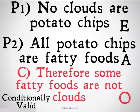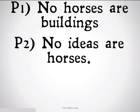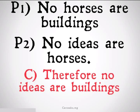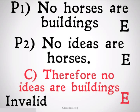No horses are buildings, no ideas are horses, therefore no ideas are buildings. This is going to be an EEE categorical syllogism, and it's going to always be invalid for Boolean as well as for Aristotle.